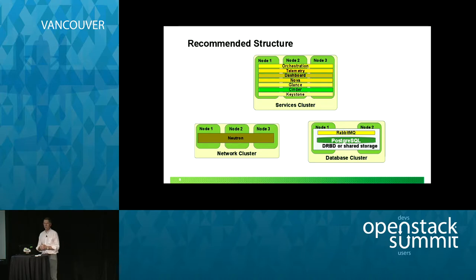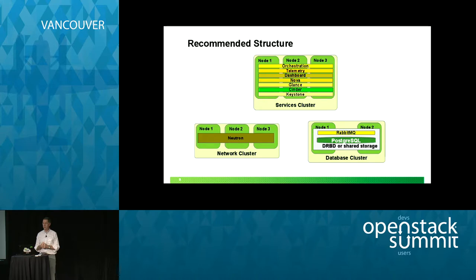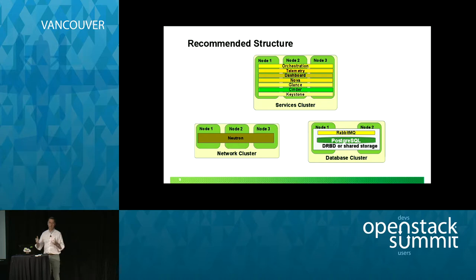We also recommend another three-node cluster for every other OpenStack service. Once you've done that, you're pretty well protected so that any single physical server going down means the rest of your cloud stays up and continues functioning as normal. We've actually automated all this through our deployment technology so that you configure the cluster, install services on the cluster, and they're automatically configured with the appropriate resource agents so that you're up and running in a highly available fashion without having to go through all the plumbing necessary to get this stuff working together.